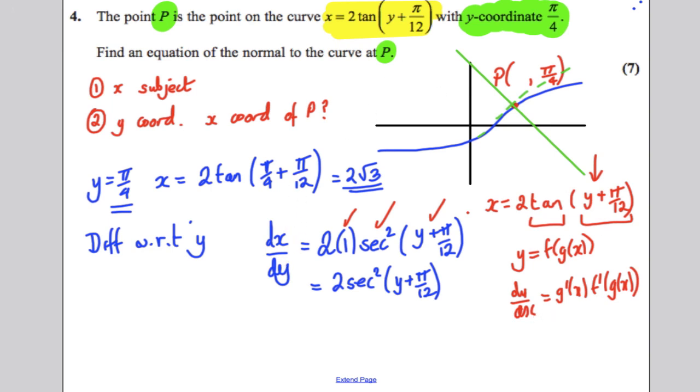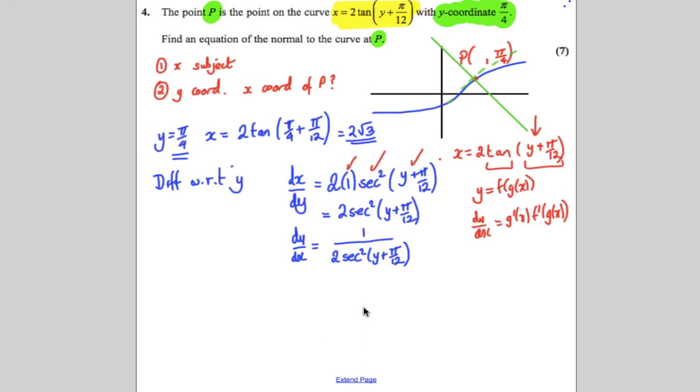This is dx by dy. Dy by dx then, we want the equation of the gradient of the tangent. That's dy by dx, it's not dx by dy. So it's 1 over this thing here, 2 sec squared y plus pi by 12. And then simply 1 over 2 here, this 1 over 2, you can write this as a half. 1 over sec squared, or 1 over sec squared must be cos squared, so that's cos squared y plus pi by 12.